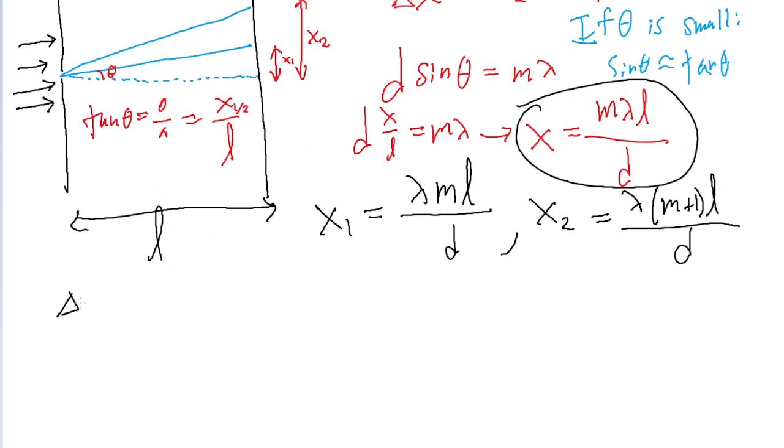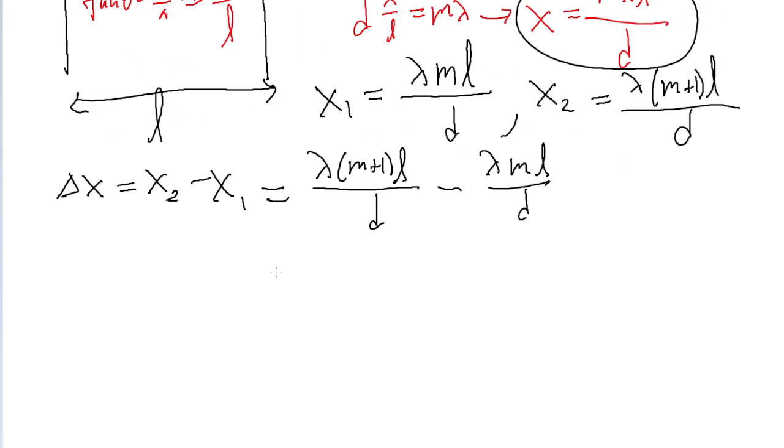Anyways, our delta x that we are given is x two minus x one. This is equal to lambda m plus one times L divided by d, all minus lambda mL divided by d. If we distribute the parentheses in the first term, that's lambda mL over d plus lambda just L over d minus lambda mL over d.